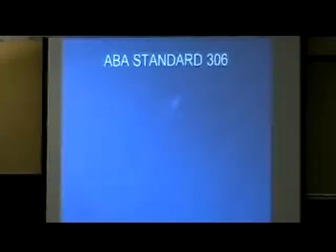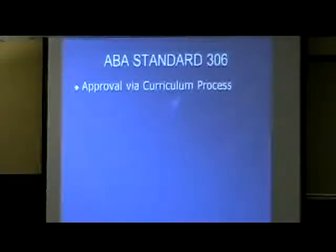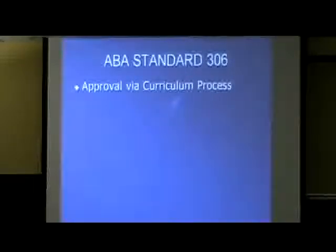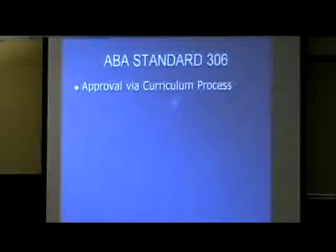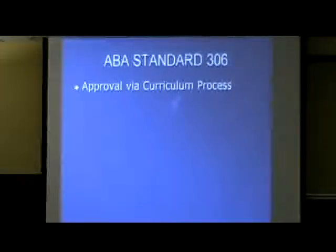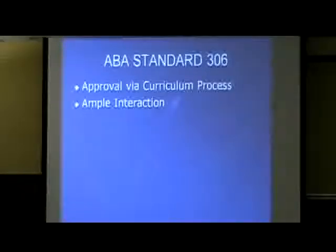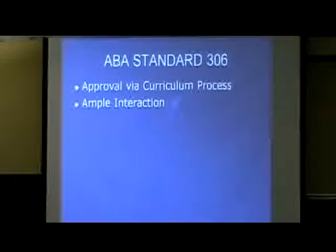What are the rules with the ABA? Basically, you must have approval from the curriculum committee. That means normal approval for the course is not sufficient for the ABA — they want a separate approval as a distance learning course. What we do is take a previously approved live class, send it back to our curriculum committee with an attachment explaining how we're going to do it as a distance learning class, and they approve it as a separate distance learning course. You also have to have ample interaction. We've found meeting that standard to be extremely easy.